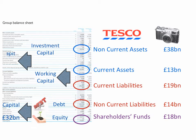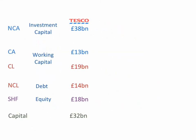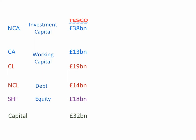Investment capital of £38 billion and negative working capital of £6 billion makes total capital employed of £32 billion. So we can see how, by identifying the five primary sections of the balance sheet, we can identify how a company is funded and how it uses that funding. Tesco has £32 billion of capital, of which approximately 40% is provided by debt and the rest through equity investment. That capital has been allocated to investment capital, although Tesco by its nature needs a lot of working capital too.